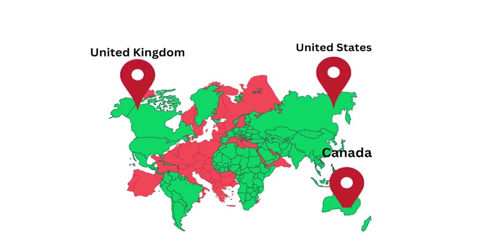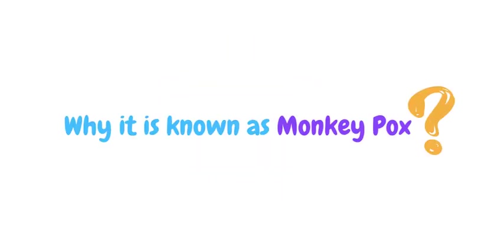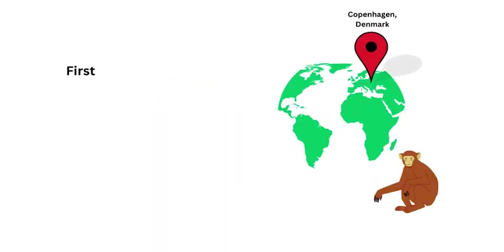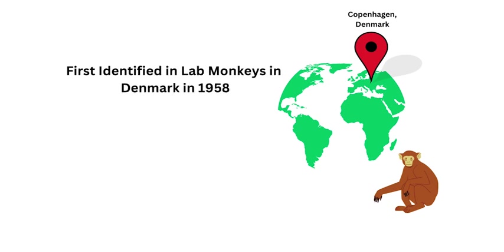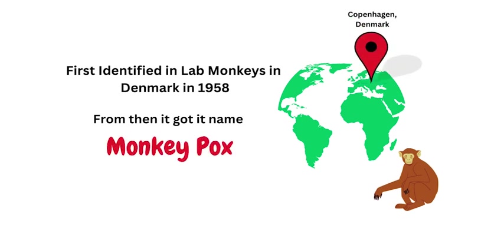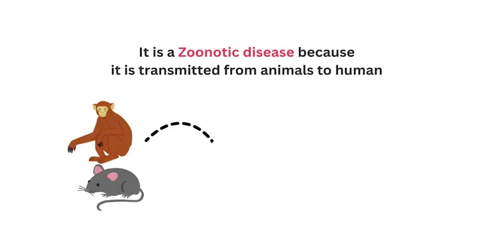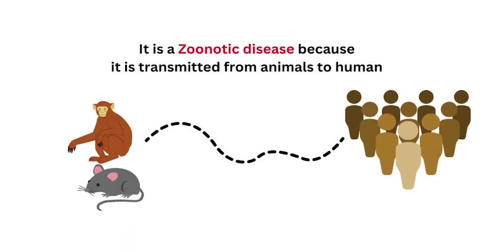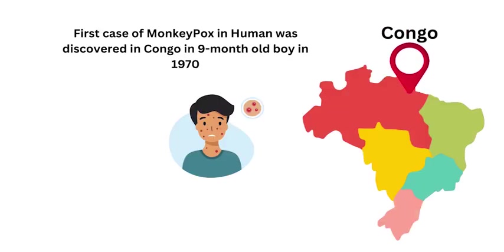You must be thinking why it is known as monkeypox. It is because it was first identified from lab monkeys in Denmark in 1958, and from then it got its name 'monkeypox.' It is known as a zoonotic disease because it is transmitted from animals to humans.